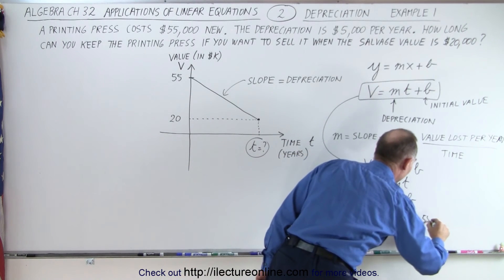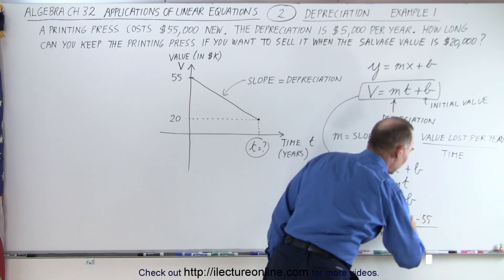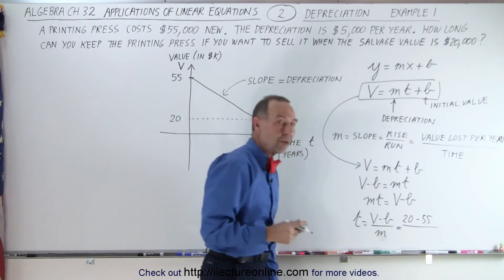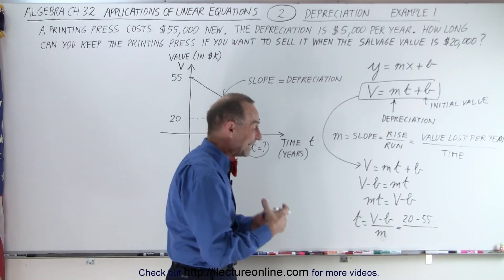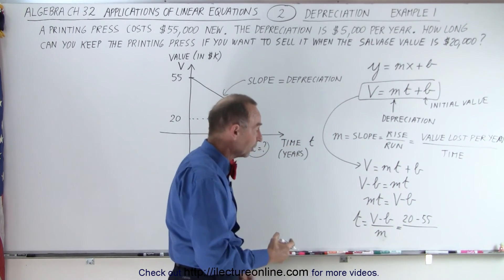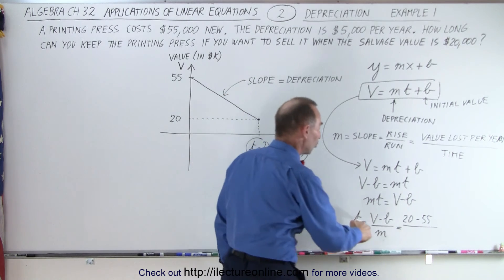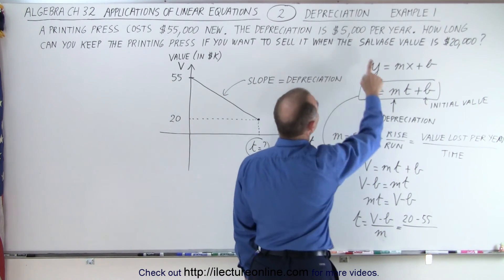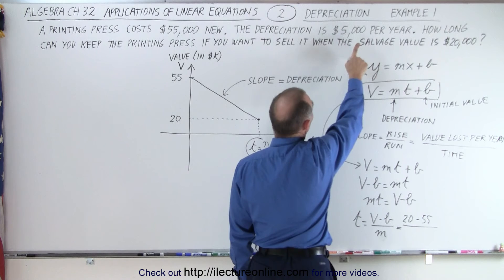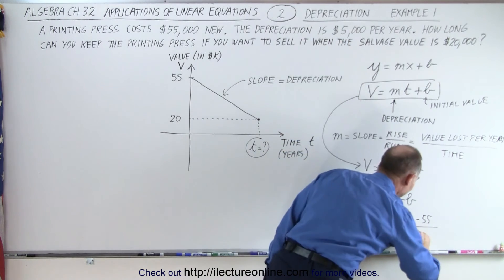And notice that will be the depreciation. That's how much value I have lost. It's going to be a negative number because I'm losing value. And then I'm dividing that by the slope. And remember, the slope was negative five thousand dollars or five K dollars. So negative five.